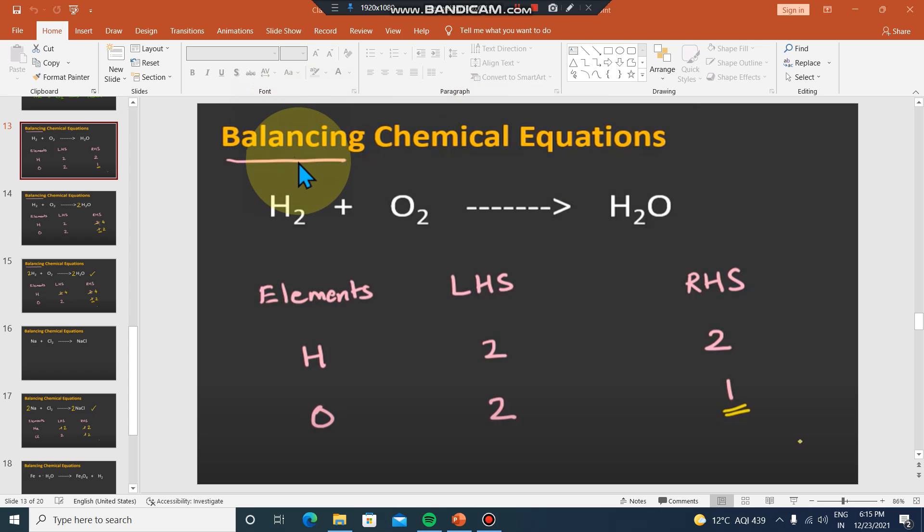Okay, so the chemical equation is balanced. The example is hydrogen plus oxygen, and this product is water. And this formula is H2O. The chemical equation is balanced.